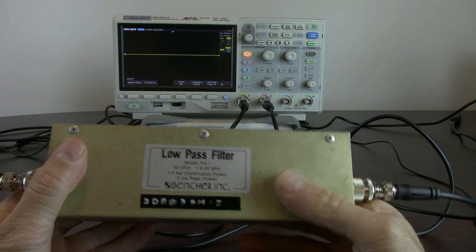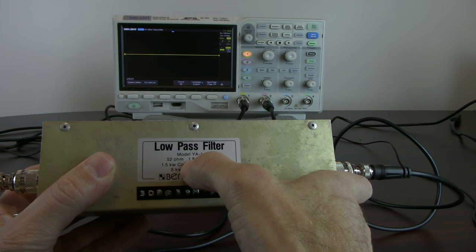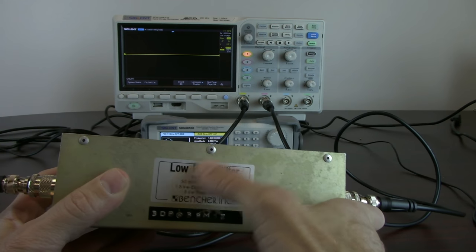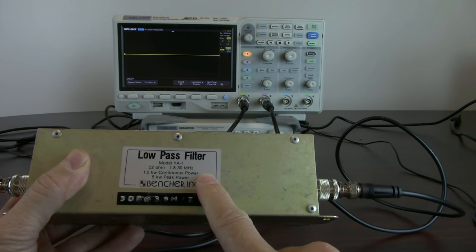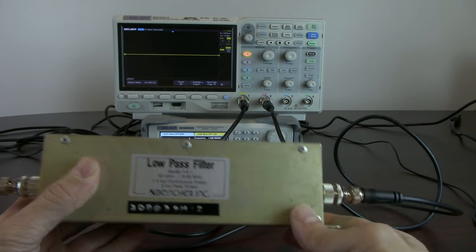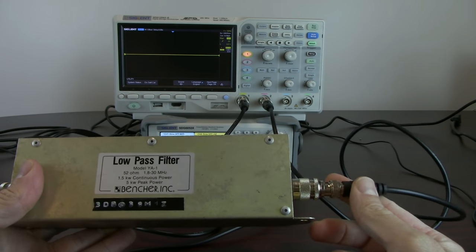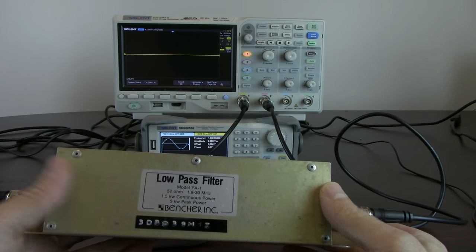In this case we're going to take a look at this low-pass filter. It's a 50 ohm filter that operates from 1.8 megahertz to 30 megahertz. And again it's a low-pass filter, so we expect it to pass everything below 30 megahertz. But as we get closer to 30 megahertz we'll start to attenuate the signal, so the amount of signal coming out of the output will decrease as we get higher and higher in frequency.